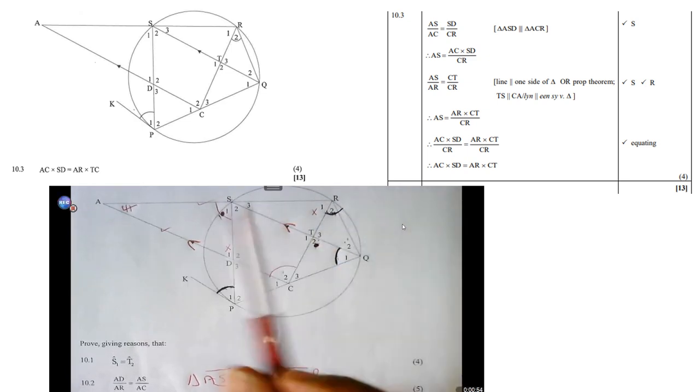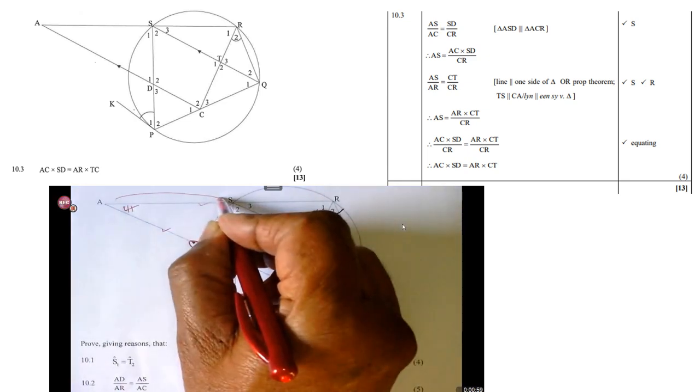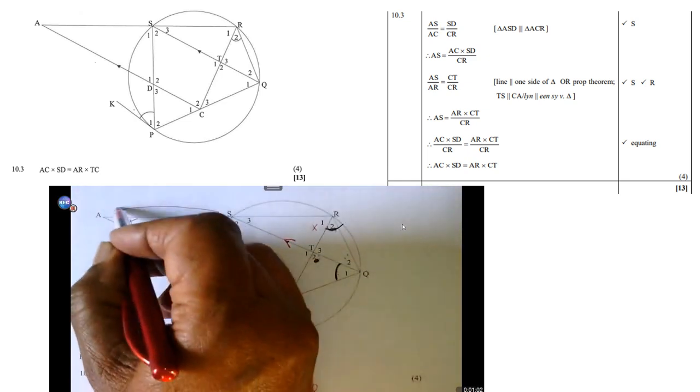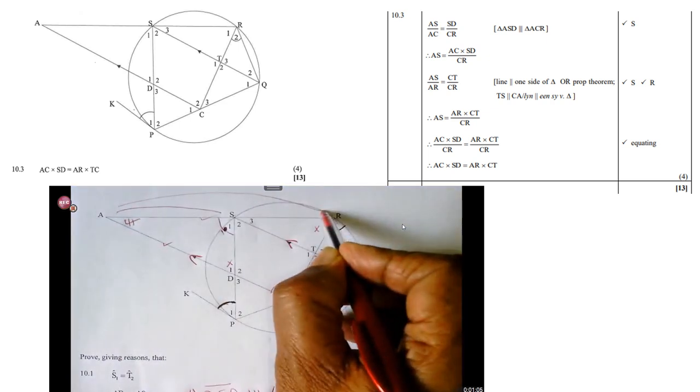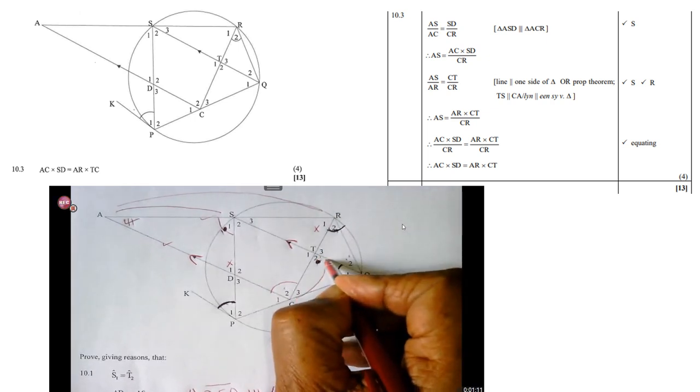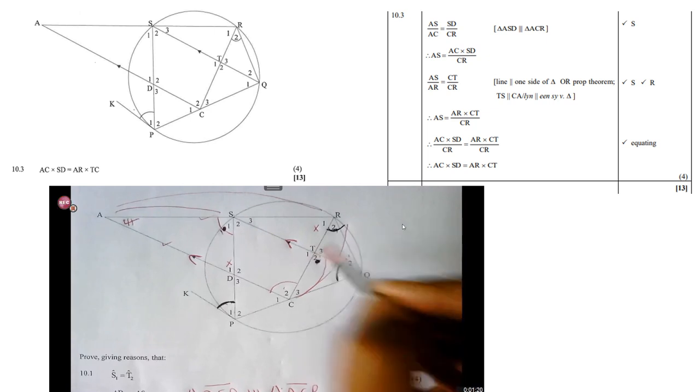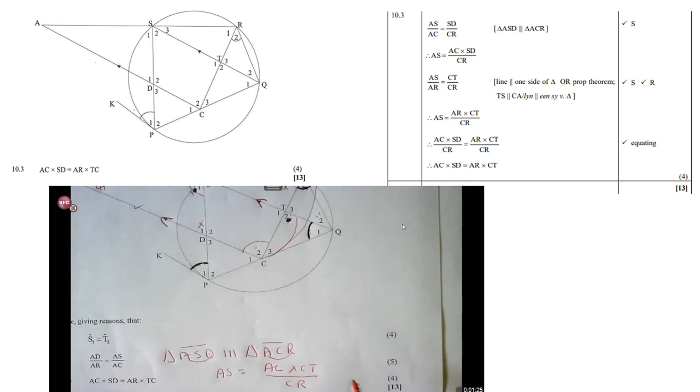Now I'm going to say AS over AR equals CT over CR. Remember those two lines are parallel. We remember that theorem. So again, cross multiply and make AS the subject. So now I've got two different values for AS. So you let them be equal, and then you'll notice that if the two denominators are equal, CR equals CR, that means the top two are also equal.